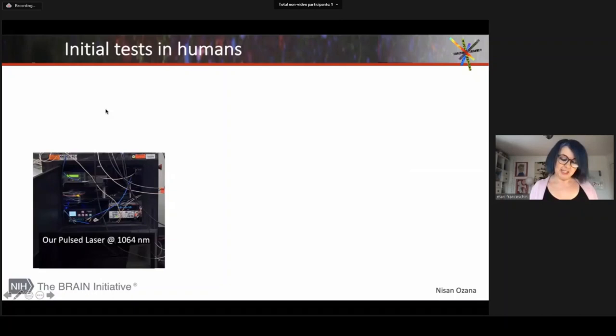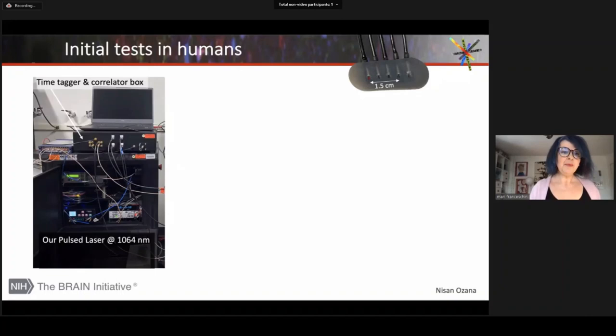We built our laser and assembled it in a cart to be able to do human subject measurements. You see the red sticker is fully approved for human subjects. We developed a small probe at different separations to test what's the optimal separation. And because the detectors we are using right now are not gated, we have a time tagger to digitize the arrival time of the photon at high resolution and we have the FPGA correlator in there.